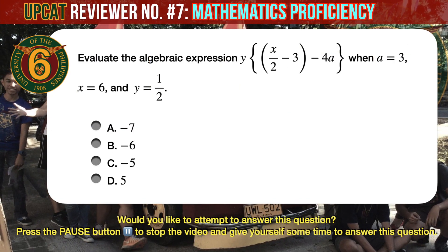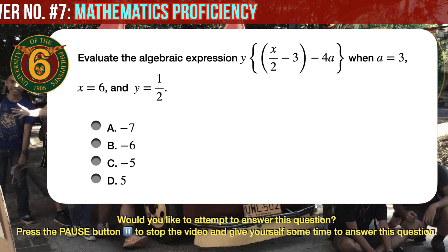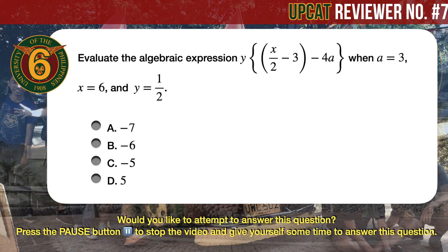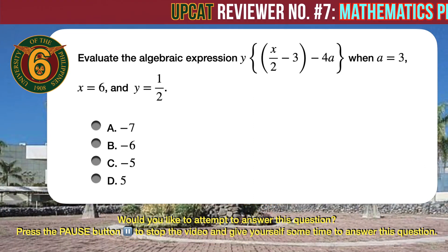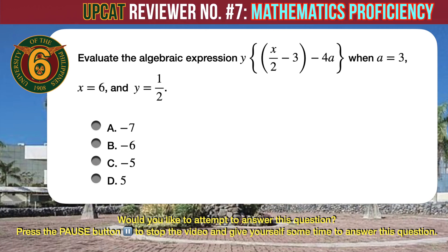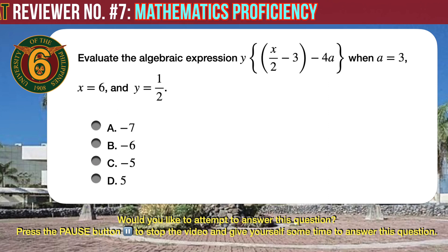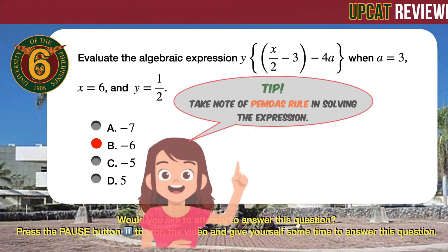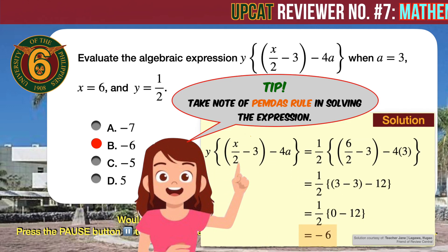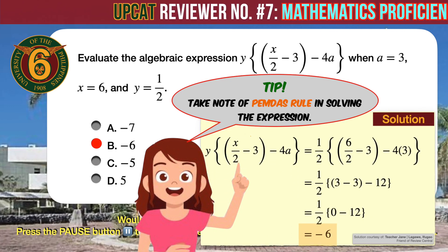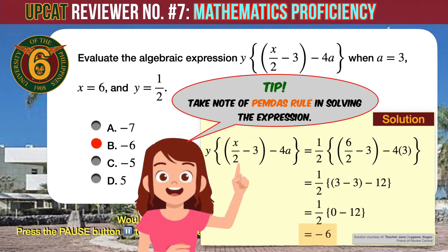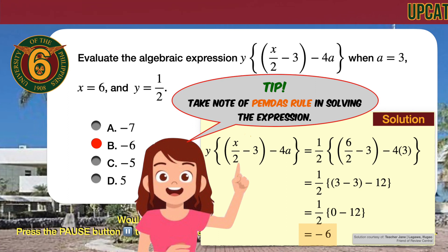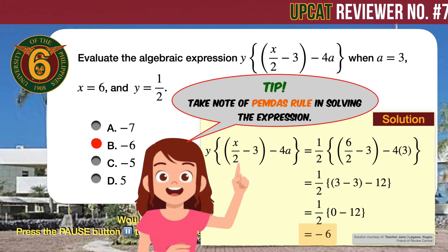Question number 6. Evaluate the algebraic expression y times the quantity (x over 2 minus 3) minus 4A, when A equals 3, x equals 6, and y equals 1 half. The correct answer is B, minus 6. Substitute the values into the expression and apply PEMDAS. We get 1/2 times (6/2 minus 3) minus 4 times 3, which simplifies to 1/2 times (3 minus 3) minus 12, giving a final answer of minus 6.